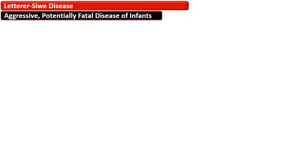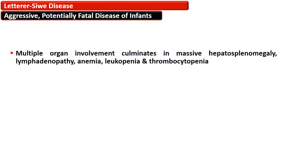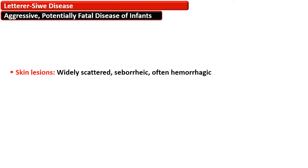The third variant, Letterer-Siwe disease, is an aggressive, potentially fatal variant. Luckily it comprises only 10% of cases of Langerhans cell histiocytosis. The age group is children less than 2 years of age who fail to thrive and become cachectic. Some cases are also reported in adults. There is multiple organ involvement with massive splenomegaly, hepatic enlargement, lymphadenopathy, and subsequent anemia, leukopenia, and thrombocytopenia.